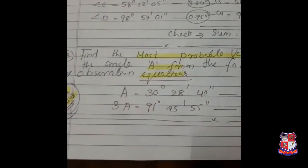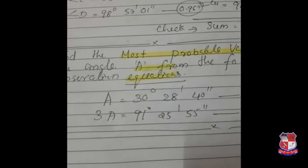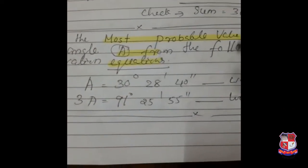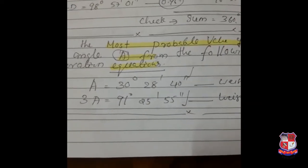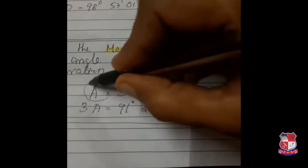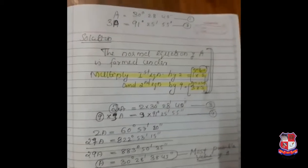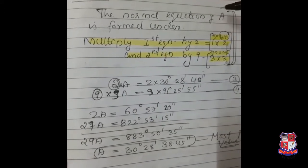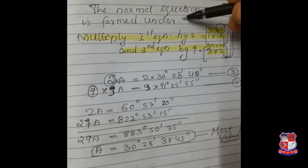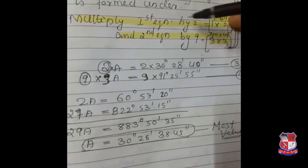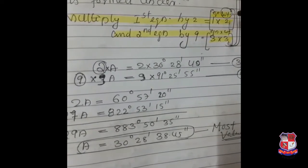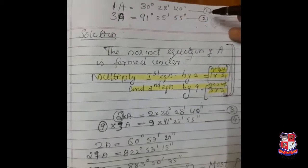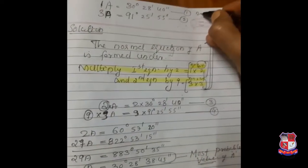One more question from this part: find the most probable value of angle A. This question involves calculating the most probable value from the following observation equations. A is given, 3A is given. We have to find the most probable value of angle A. This is the formation of normal equations. The weight of the first equation is 2 and the weight of the second is 3.